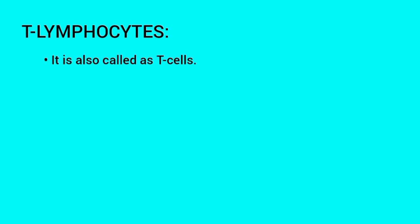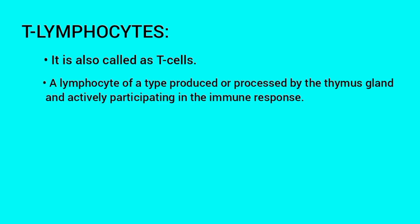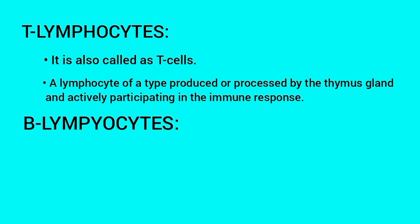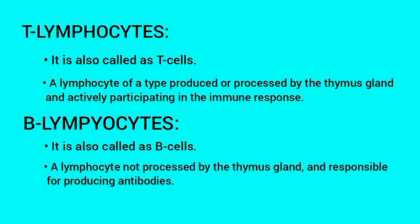Now let us see about T-lymphocytes and B-lymphocytes. T-lymphocytes, also called T-cells, are lymphocytes produced or processed by the thymus gland and actively participate in the immune response. B-lymphocytes, also called B-cells, are lymphocytes not processed by the thymus gland and are responsible for producing antibodies.